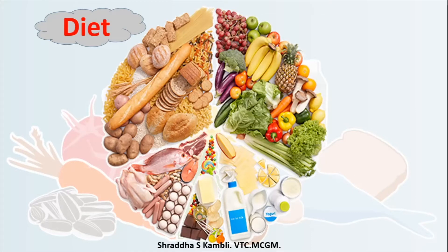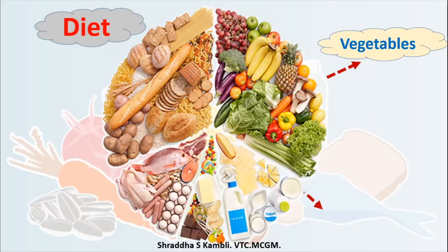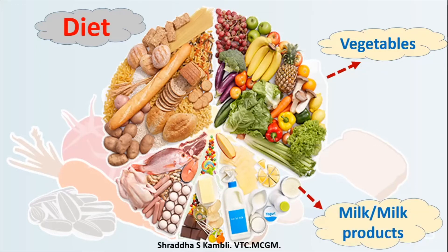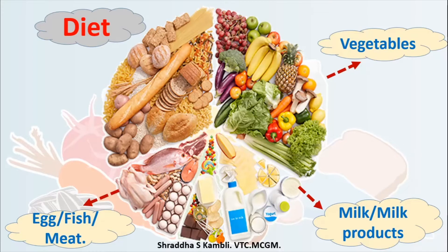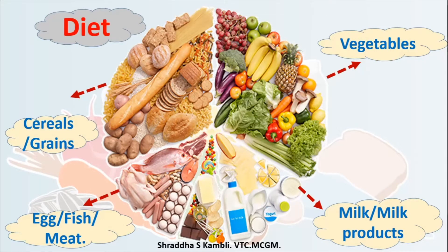We also discussed which things we need to eat. We need to eat vegetables and fruits. We need to drink milk and consume milk products like ghee, butter, curd, paneer, and cheese. All these give good nutritional value to our body and are very healthy. People who are okay with non-vegetarian food should eat chicken, fish, meat, and eggs. And we should also include grains, cereals, and pulses in our diet on a daily basis.